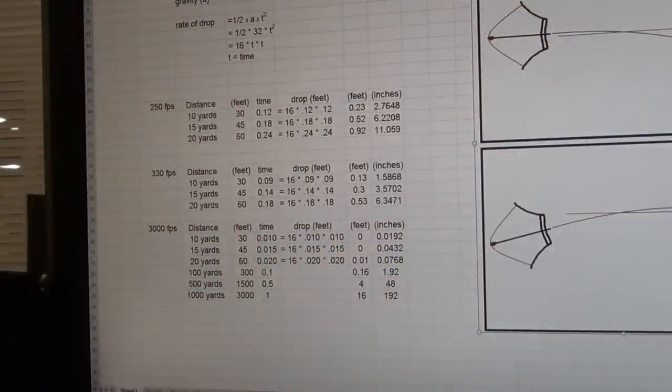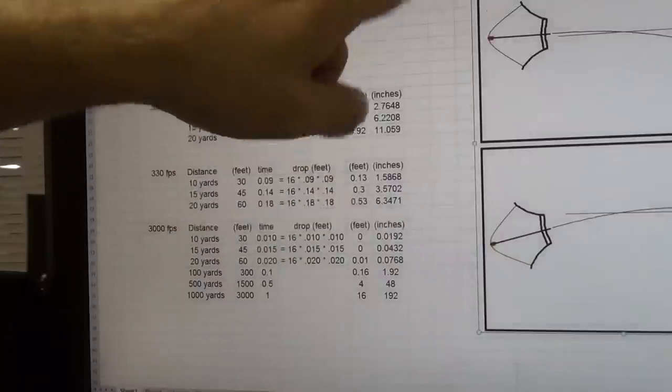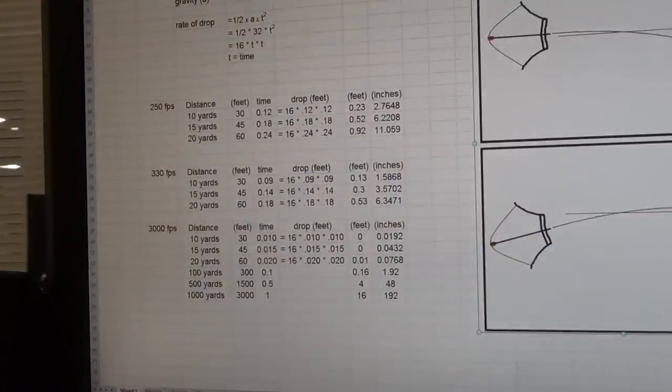I think, I would think at 20 yards, your group size should, would be better, it would be smaller than that so that you'd have two distinct, not overlapping. Now, realistically, if you're shooting at 10 or 20 yards, I think both of them would be a kill shot.